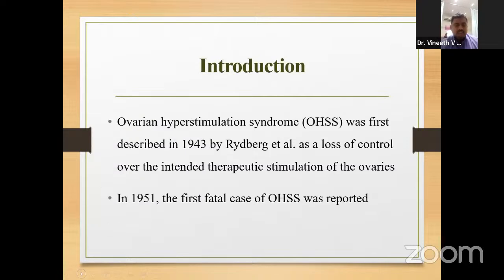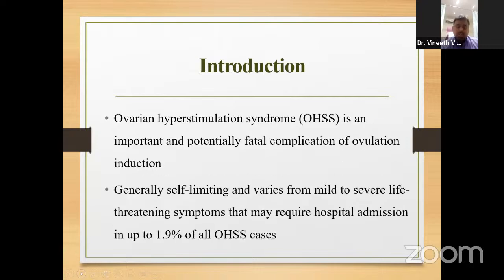Ovarian Hyperstimulation Syndrome was first described in 1943 as a loss of control over the intended therapeutic stimulation of ovaries. In 1951, the first fatal case of OHSS was reported. OHSS is an important and potentially fatal complication of ovulation induction. It is generally self-limiting and varies from mild to severe life-threatening symptoms that may require hospital admission. Only 1.9% of all OHSS cases are those that are indicated.